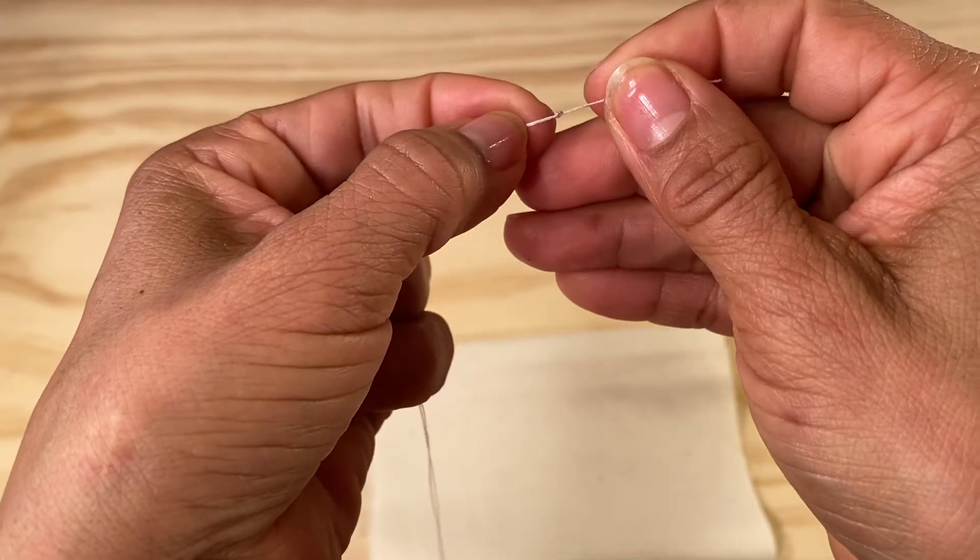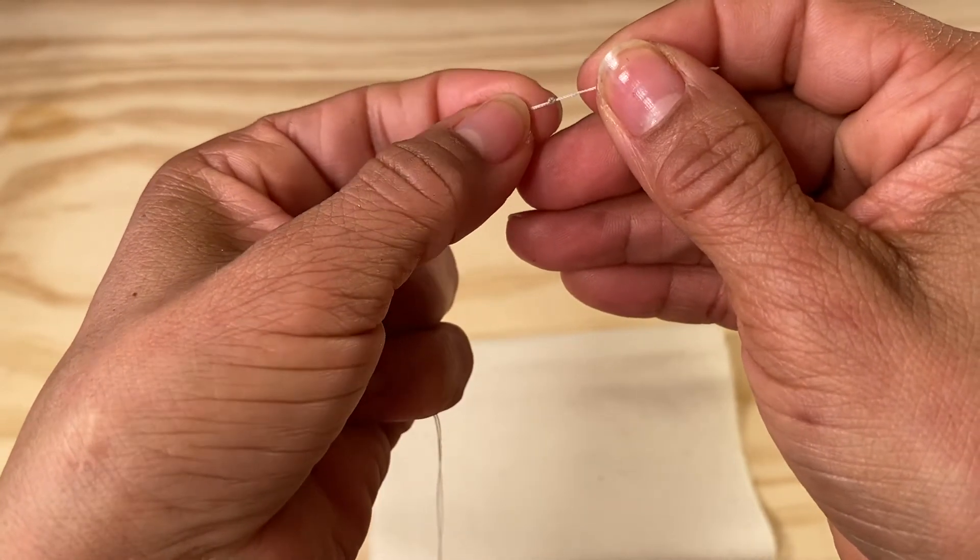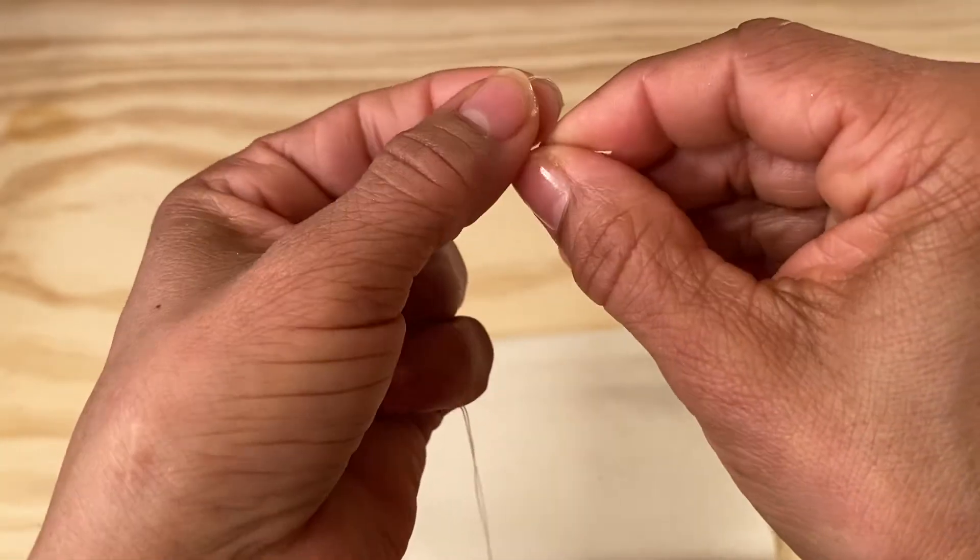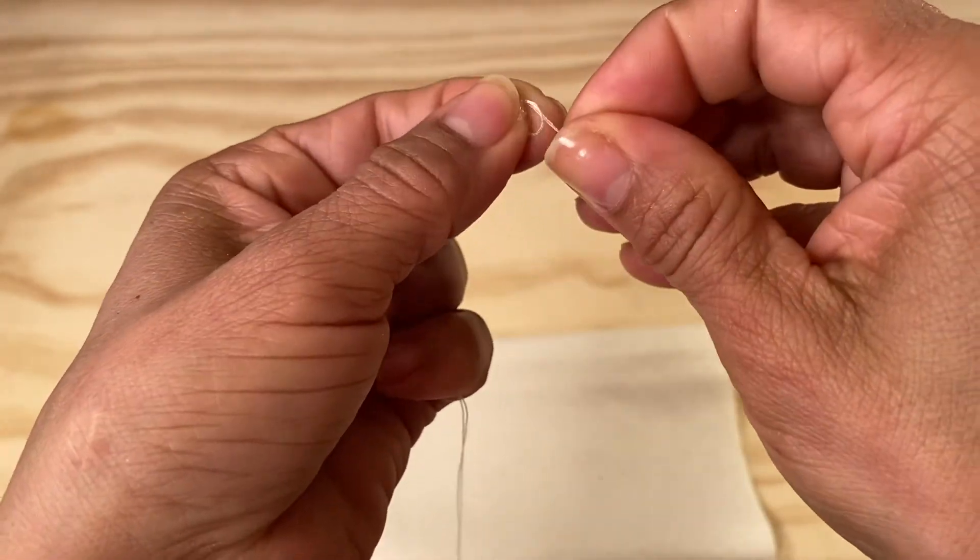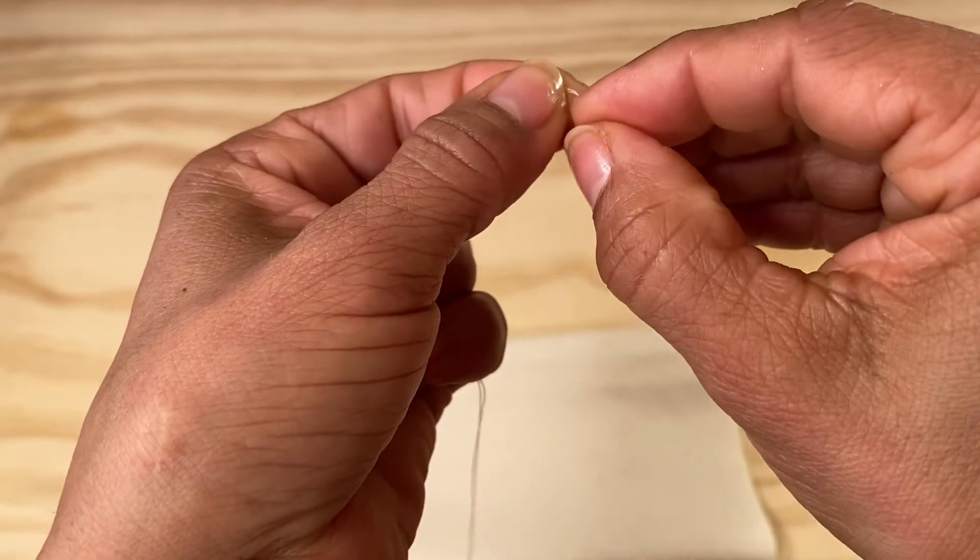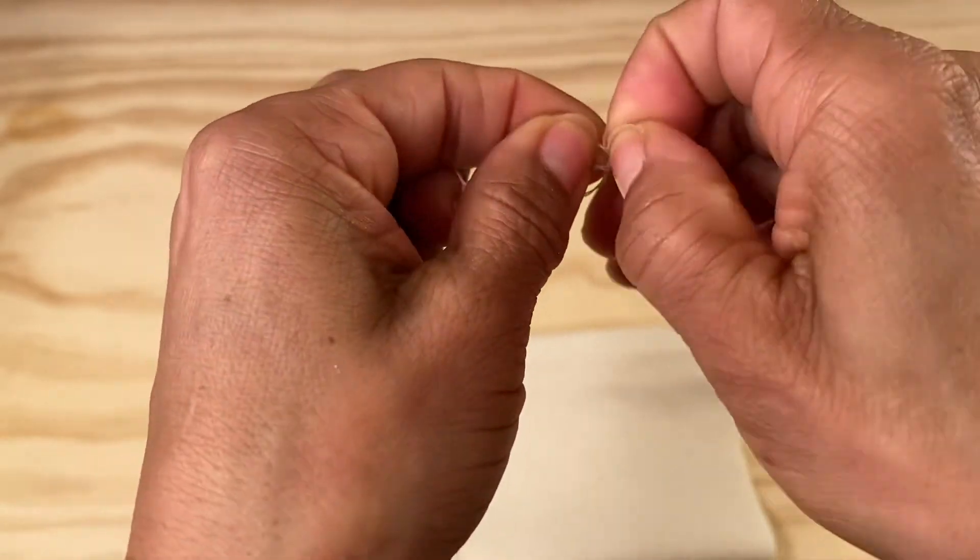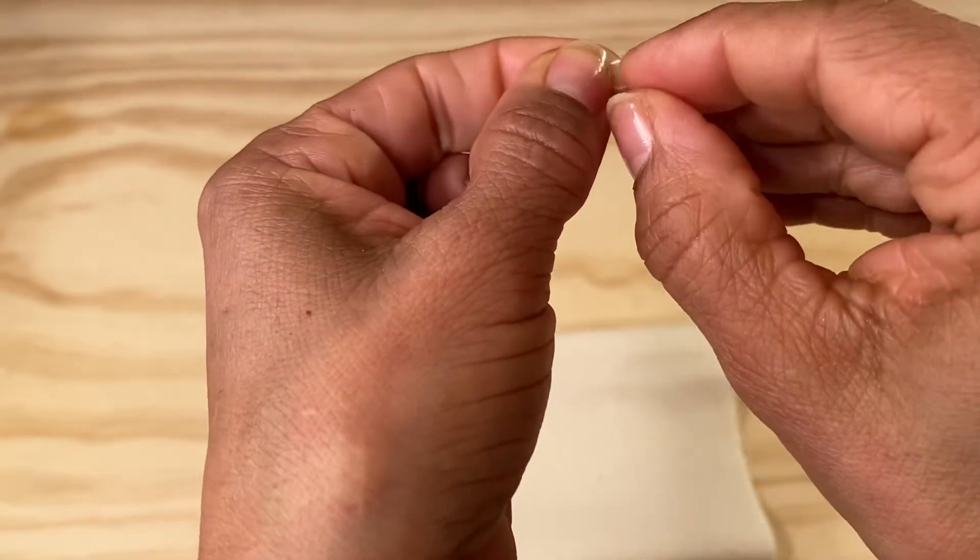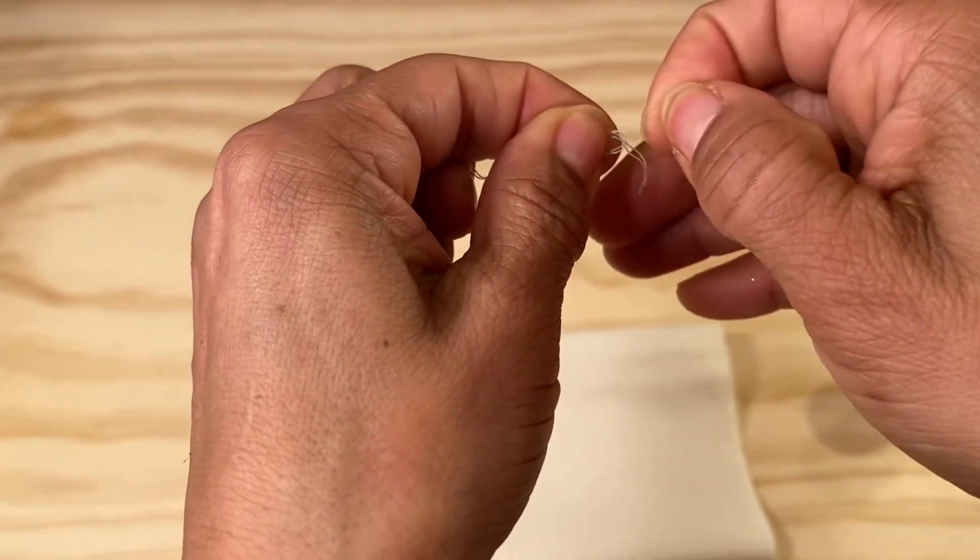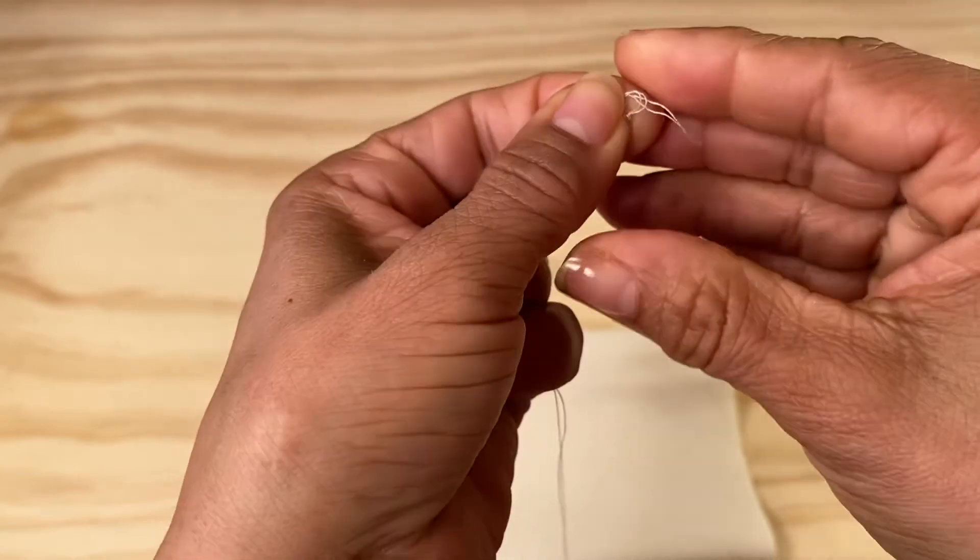Like this. See, you have the second one, it's a little more bigger. You can do one more in the same spot. That's it. Pass it through it. Wait one second.